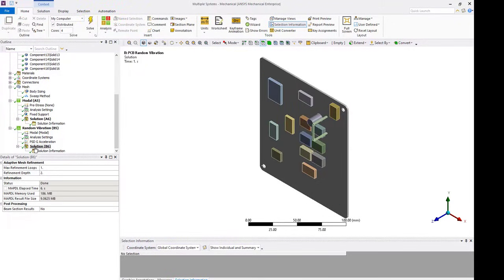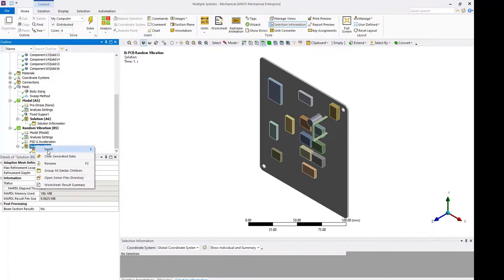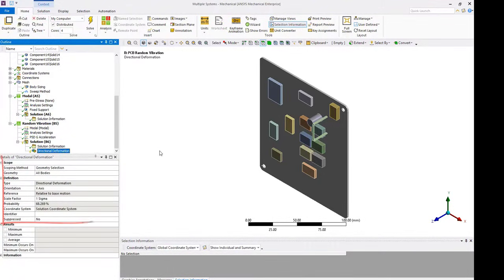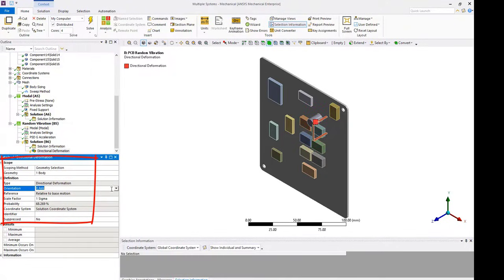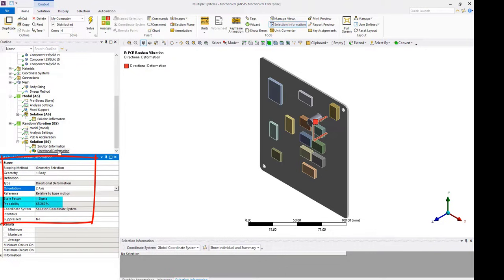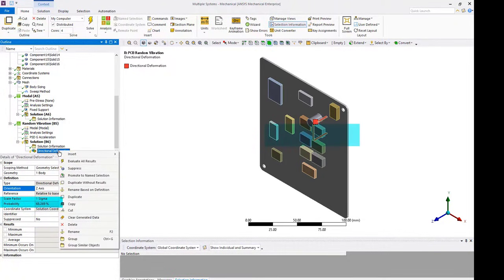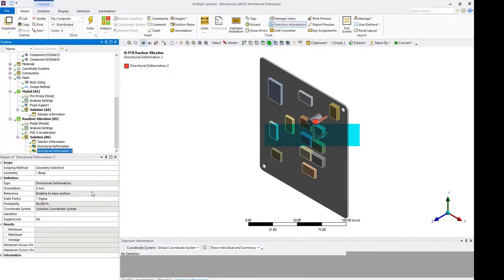Once completed, we scope the directional deformation in z-direction to the tallest component on the PCB board. We set the scale factor to 1 sigma. We then duplicate this result and set the scale factor to 3 sigma for comparison later.